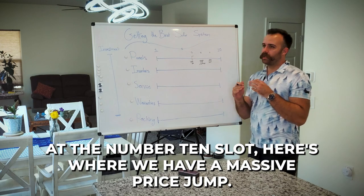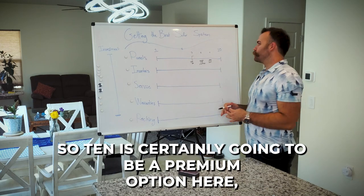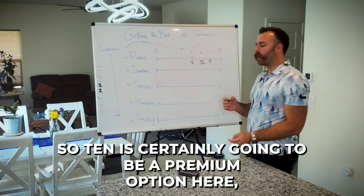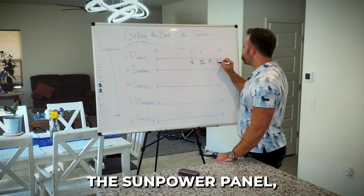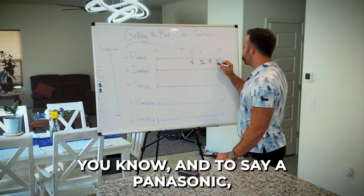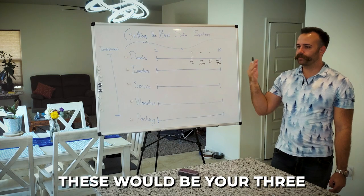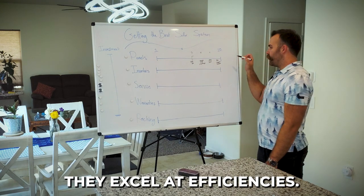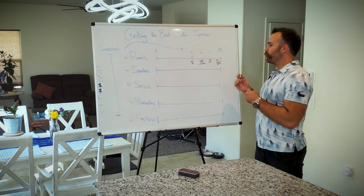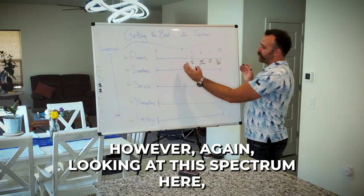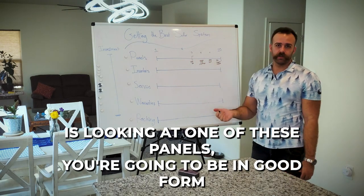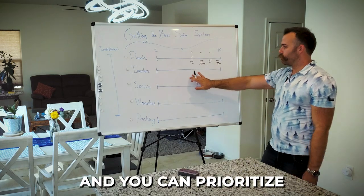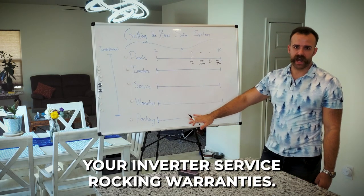Really well-rounded panel that's going to have perks and features, great efficiencies, great temperature coefficients, how resilient the panel is to the heat, with great company backing to boot here. At the number 10 slot, here's where we have a massive price jump. So 10 is certainly going to be a premium option here, but I'm going to list the likes of the REC panel, the SunPower panel, and a Panasonic. These would be your three premium price points here. They excel at efficiencies. However, again, looking at this spectrum here, as long as your estimate is looking at one of these panels, you're going to be in good form, and you can prioritize your inverter, service, racking, warranties.